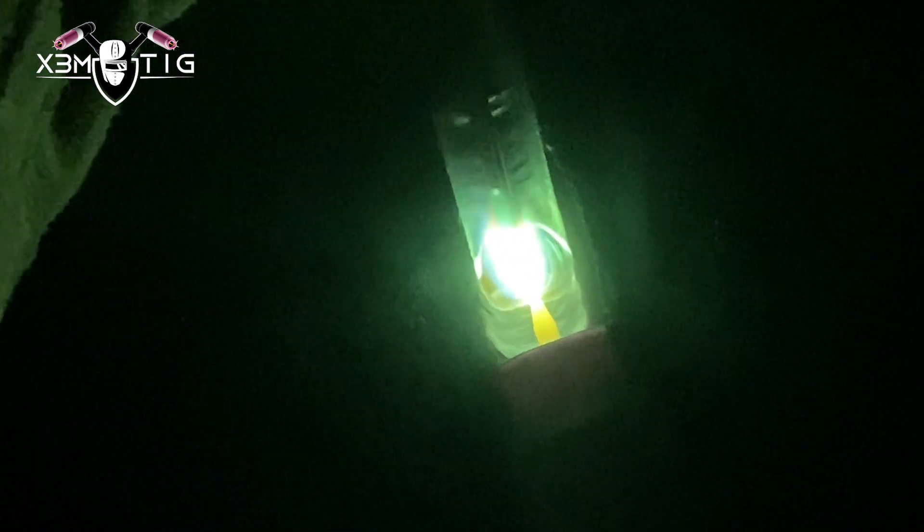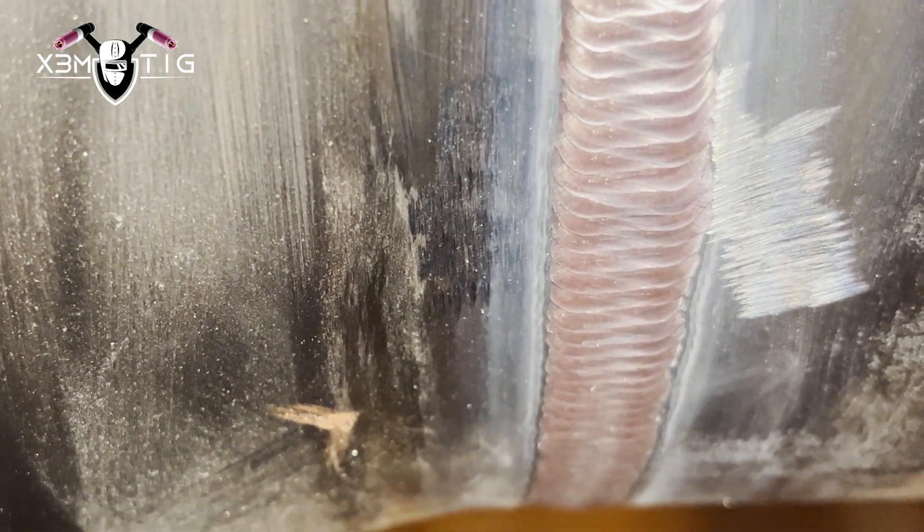I'm just going to fill to flush after my hot pass. One pass fill, I slow down. As I said, 160 amps melts really nice. You can really stretch that puddle. That's it, fill to flush.